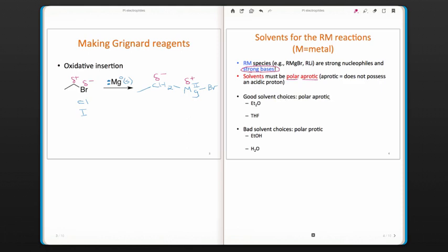Good solvent choices are polar aprotic, such as diethyl ether. Notice there's no hydrogen on the oxygen heteroatom, so there's no protic or acidic proton. Tetrahydrofuran is another good choice. It's a cyclic version of diethyl ether. Because it's cyclic, it will have a higher boiling point than diethyl ether, so this is very useful in organic reactions.